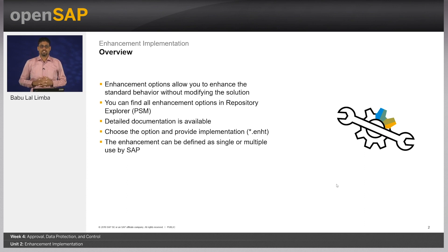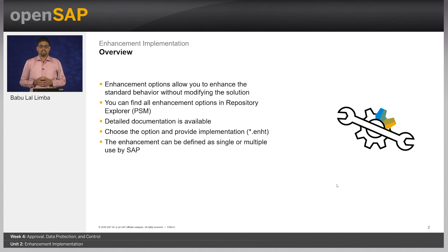Enhancement implementations are objects created in Cloud Application Studio that can be used to add custom logic into standard processes within SAP Business ByDesign. You can look at it as extensibility in functionality which allows you to alter the standard SAP Business ByDesign logic beyond what SAP has made available in the public solution model. However, it can only be used in very specific and predefined ways.